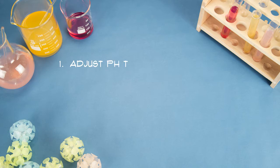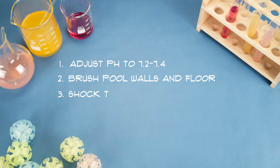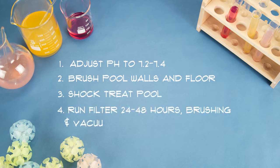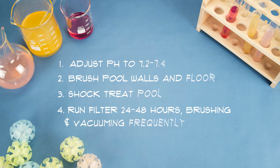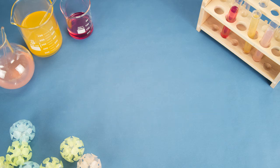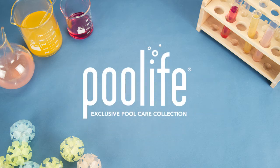Adjust pH to 7.2 to 7.4. Brush pool walls and floor. Shock treat pool. Run filter 24 to 48 hours. Brushing and vacuuming frequently. If you have stubborn algae, see your local Pool Life dealer for expert advice.